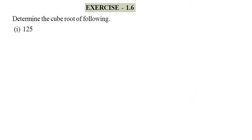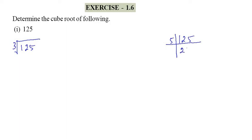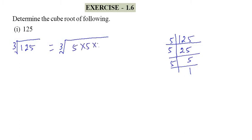Now come to exercise 1.6, question number 1: determine the cube root of the following. Cube root of 125. First of all, do the prime factorization of 125. It is divided by 5: 5 × 5 = 25, then 5 × 5 = 25, then 5 × 1 = 5. So you write 5 × 5 × 5. It has only one triplet, so that is 5, and 5 is the answer of the cube root of 125.